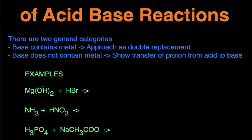So first example we have magnesium hydroxide, Mg(OH)2, reacting with hydrobromic acid, HBr. We want to take a look at the base. This is the acid because it has H in the front, so this is the base. Look at the base and we're checking if it contains a metal or not. Magnesium is a metal, so since it contains a metal, we're going to approach this as if it were a double replacement reaction.